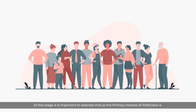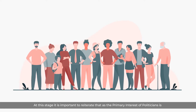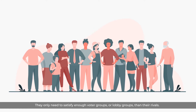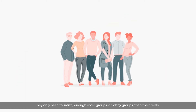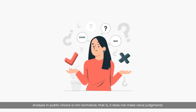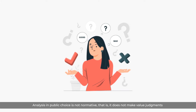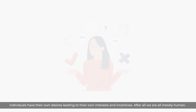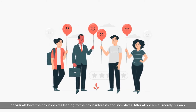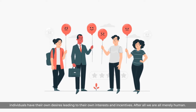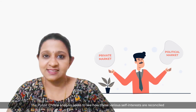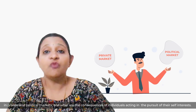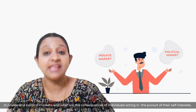At this stage, it is important to reiterate that since the primary interest of politicians is winning elections, they need not satisfy the primary interests of all voter groups — they only need to satisfy enough voter groups or lobby groups compared to their rivals. Analysis in public choice is not normative; it does not make value judgments about whether a particular self-interest is good or bad. It only emphasizes that all individuals have their own desires leading to their own interests and incentives. After all, we are all merely human. Public choice analysis seeks to see how these various self-interests are reconciled in private and political markets, and what are the consequences of individuals acting in pursuit of their self-interests.